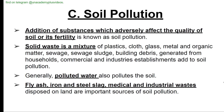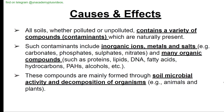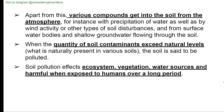All soils contain a variety of naturally present compounds including inorganic ions, metals, and salts such as carbonates, phosphates, sulfates, and nitrates, and organic compounds such as proteins, lipids, DNA, fatty acids, hydrocarbons, and alcohols — mainly formed through soil microbial activity and decomposition of organisms. Various compounds also enter soil from the atmosphere through precipitation, wind activity, and from surface water bodies and groundwater. When the quantity of soil contaminants exceeds natural levels, the soil is said to be polluted.